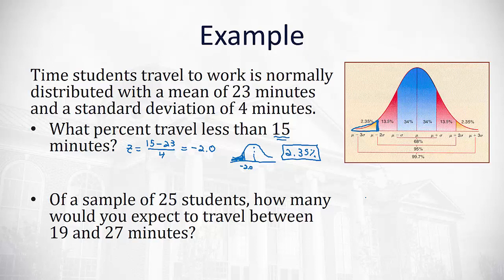Let's say we have a sample of 25 students. How many of those students would we expect to be traveling between 19 and 27 minutes? Well let's find out how many standard deviations from the mean those each are. For the 19, we'll take 19 minus the mean of 23 divided by the standard deviation of 4. 19 minus 23 is negative 4 divided by 4 is negative 1. So we're one standard deviation to the left.